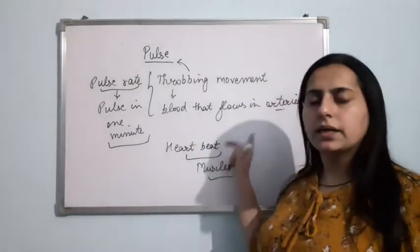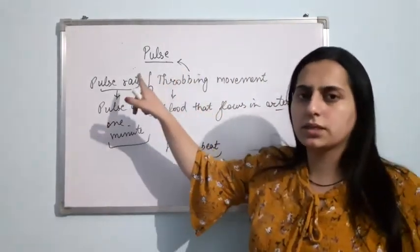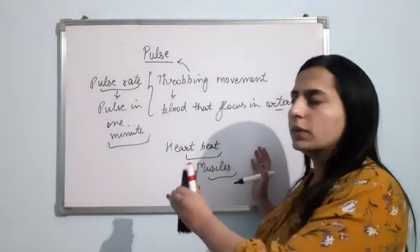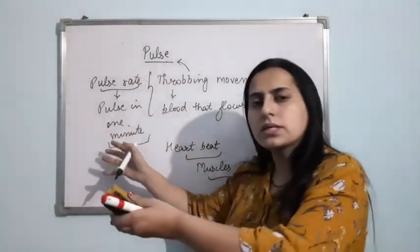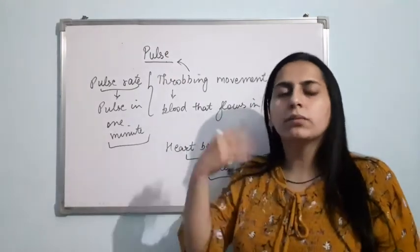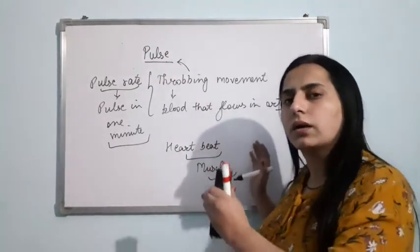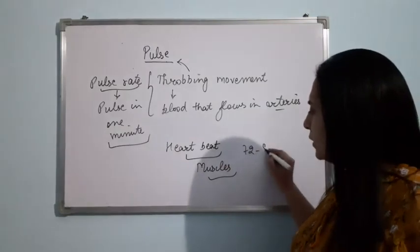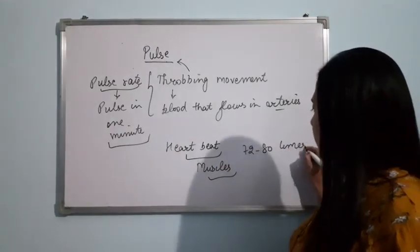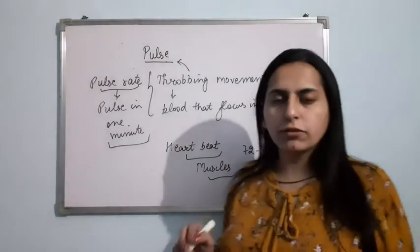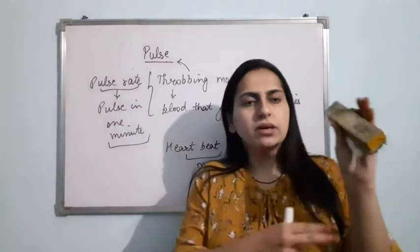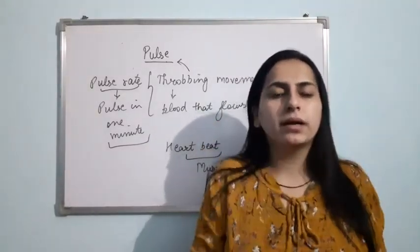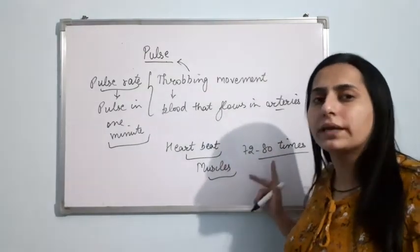One heartbeat is responsible for one pulse. So basically the rate of heartbeat will tell the rate of the pulse. Pulse in one minute will be determined by the rate of the heartbeat. Our heart beats 70 to 80 times in one minute. So if you place your fingers and count the movement for one minute, it will come out to be 72 to 80.